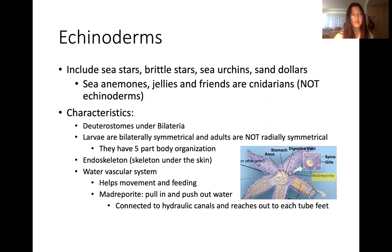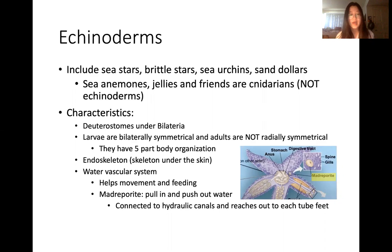Some general characteristics include echinoderms being under deuterostomes and under bilateria. Larvae are bilaterally symmetrical and adults are not radially symmetrical. Instead they have a five-part body organization and they have an endoskeleton, meaning they have skeleton under the skin. They also have a water vascular system which helps movement and feeding. As seen in this picture, they have what's called a madreporite which pulls in and pushes out water, connected to the hydraulic canals and reaching out to each tube foot.